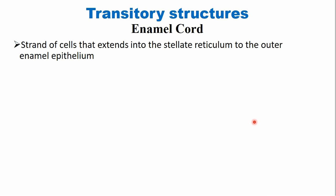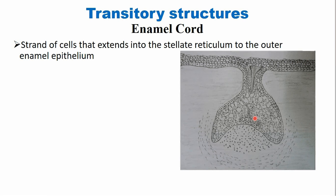Another structure is called the enamel cord. These are strands of cells that extend from the stellate reticulum to the outer enamel epithelium — you can see strands extending from the enamel knot to the outer enamel epithelium. This structure is sometimes also referred to as the enamel septum. It may provide a continuous supply of cells to the enamel knot or to the inner enamel epithelium. So the three transitory structures are the enamel knot, enamel cord, and enamel niche.